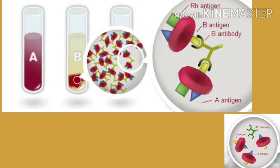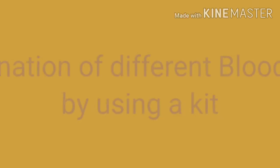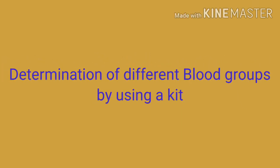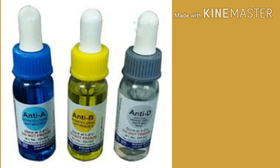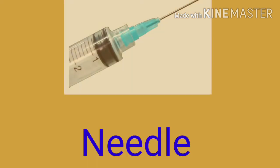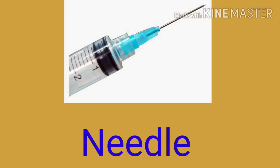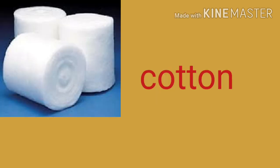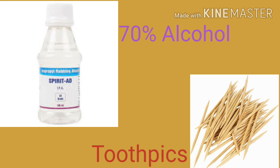Now coming to the determination of blood groups using a kit. For this we need: anti-A serum, anti-B serum, and anti-RhD serum; a porcelain white plate; a sterilized needle; cotton; 70% alcohol; and toothpicks.